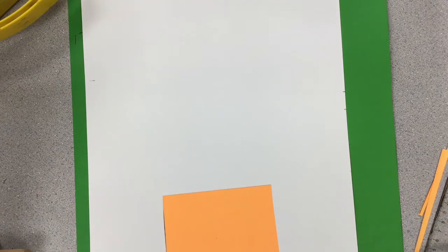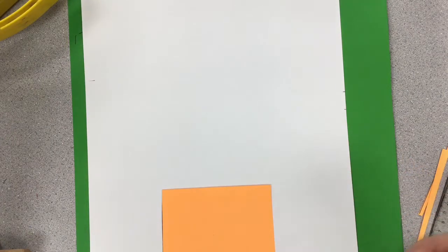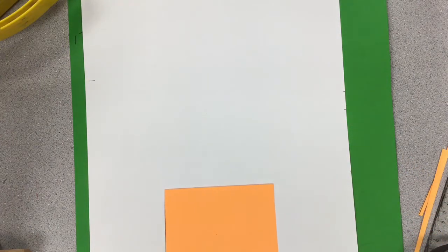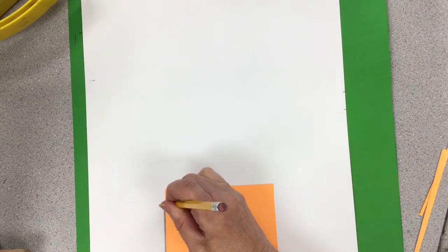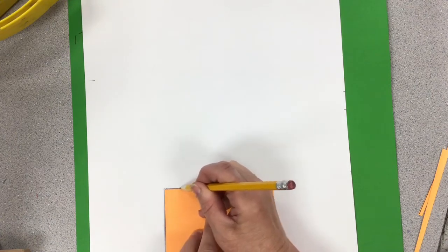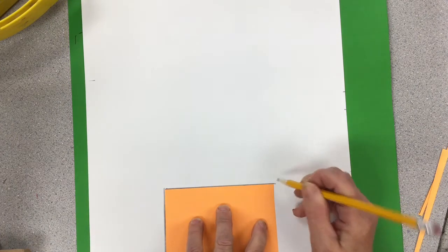So, using a pencil and a ruler, I'm just going to center this and go ahead and trace. And this will be where my main doorway is to my Gothic Cathedral.